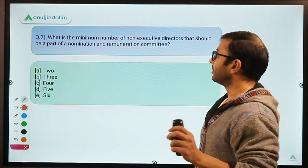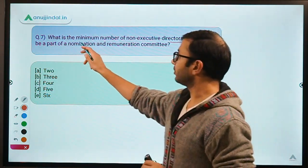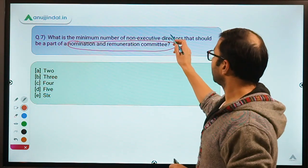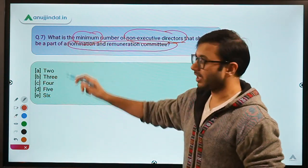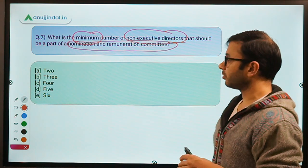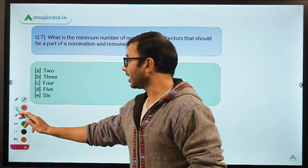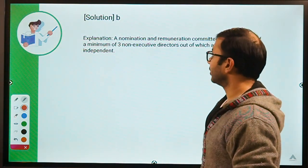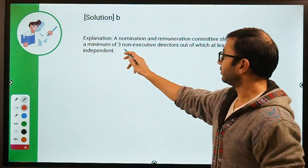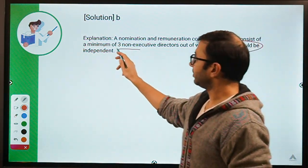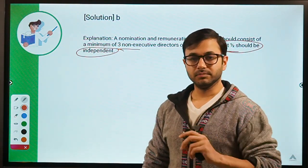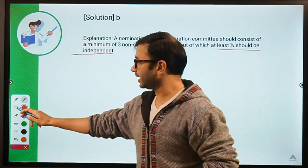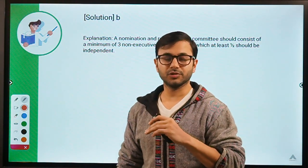Question seven: what is the minimum number of non-executive directors that should be part of the nomination and remuneration committee? The options are two, three, four, five, and six. The correct answer is B — three. A nomination and remuneration committee should consist of a minimum of three non-executive directors, out of which at least half should be independent. Remember both pieces of information.